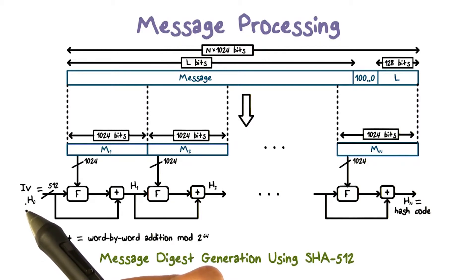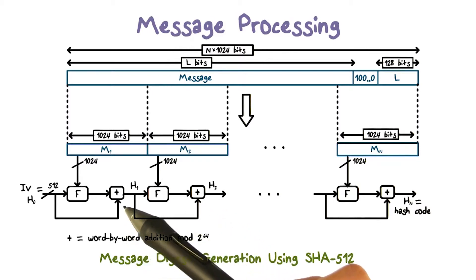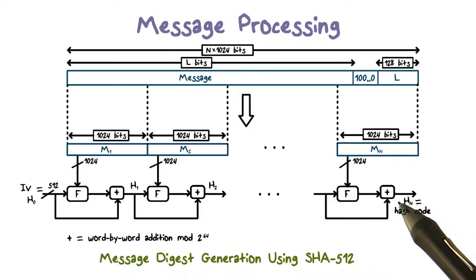The IV is a 512-bit value, hardcoded in the algorithm. Again, the message is processed one block at a time. At each block, the input includes the output of the processing of the previous block. And the result of the processing of the last block is the hash of the entire message.